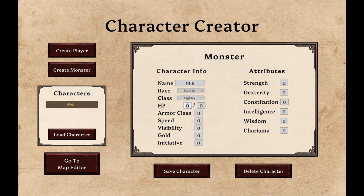Now, we create a monster named Phil, a human fighter. Unlike players, the DM needs to roll initiative with the monsters. Now, we save the character.